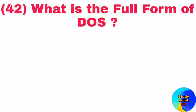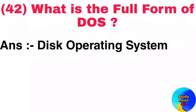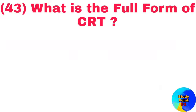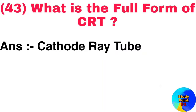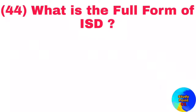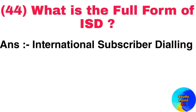Question number 42: What is the full form of DOS? Answer: Disk operating system. Question number 43: What is the full form of CRT? Answer: Cathode ray tube. Question number 44: What is the full form of ISD? Answer: International subscriber dialing.